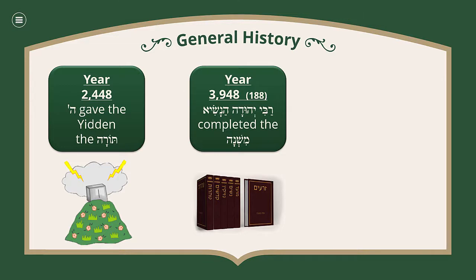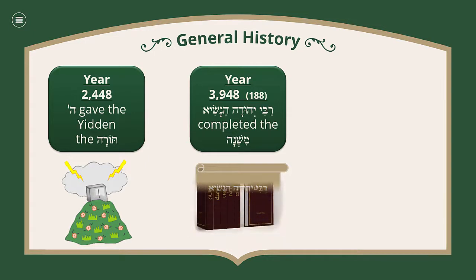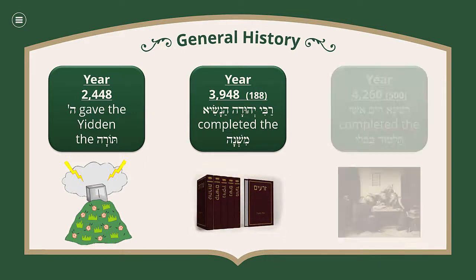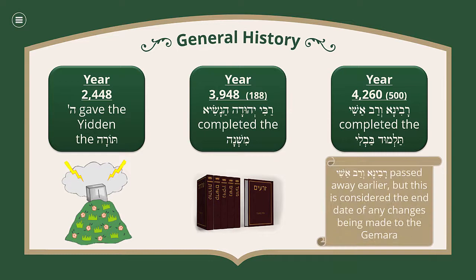after the time of Bayis Sheini, in the year 3948 Rabbi Yehudah HaNasi completed and compiled the Mishnah. Rabbi Yehudah HaNasi and all those in the Mishnah are called Tannaim. Then 312 years after that — again this is an estimate date — Ravina and Ravashi completed the Talmud Bavli. Ravina and Ravashi actually passed away earlier than the year 4,260,